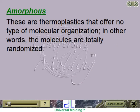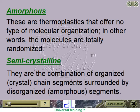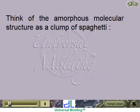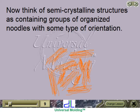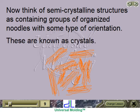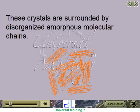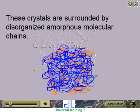Amorphous thermoplastics offer no type of molecular organization — in other words, the molecules are totally randomized. Semicrystalline materials are a combination of organized crystal chain segments surrounded by disorganized amorphous segments. Think of the amorphous molecular structure as a clump of spaghetti, and think of semicrystalline structures as containing groups of organized noodles with some type of orientation. These organized groups are known as crystals, and they are surrounded by disorganized amorphous molecular chains.